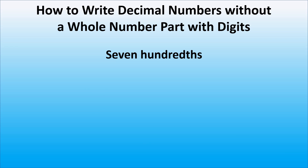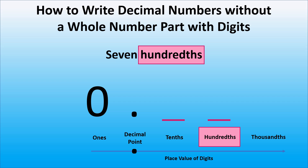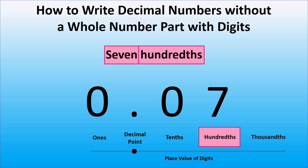What about seven hundredths? As there is no whole number part, we will write zero followed by the decimal point. Hundredths means that we need to have two digits to the right of the decimal point. So we will write seven in the hundredth place. As we don't have anything in the tenth place, we will write a digit zero in that place.